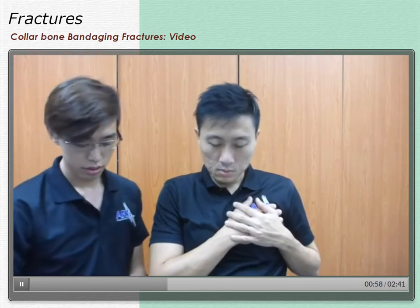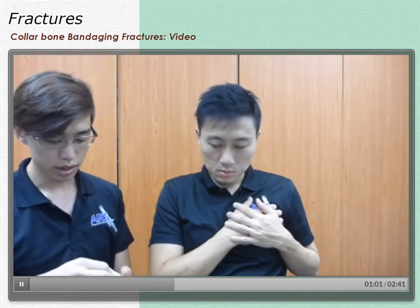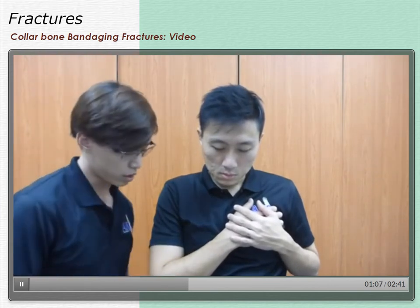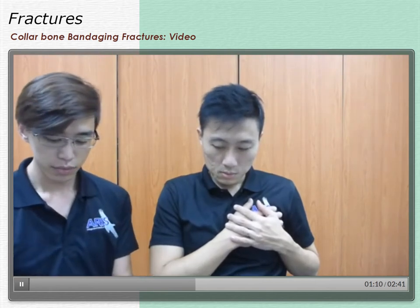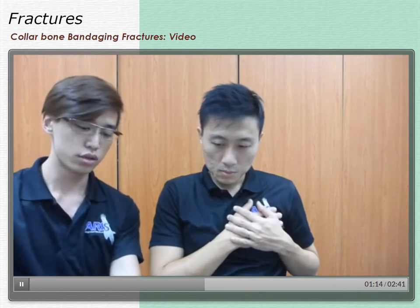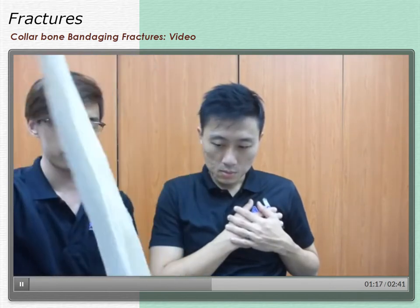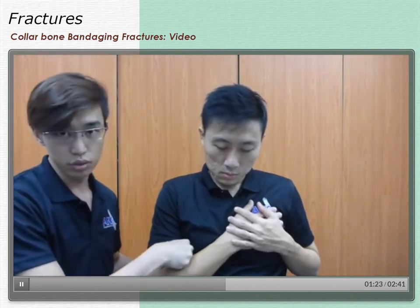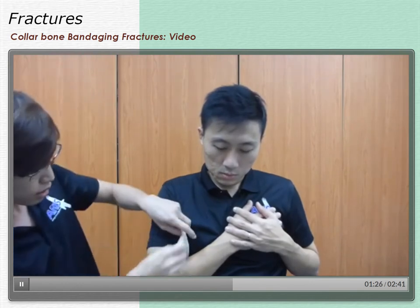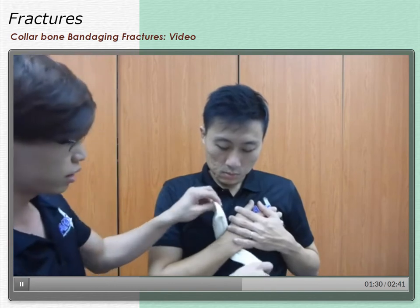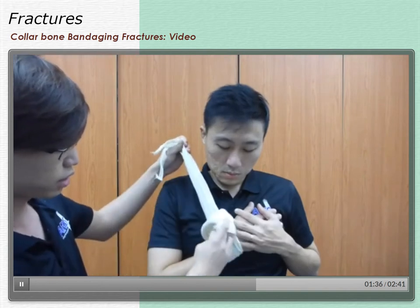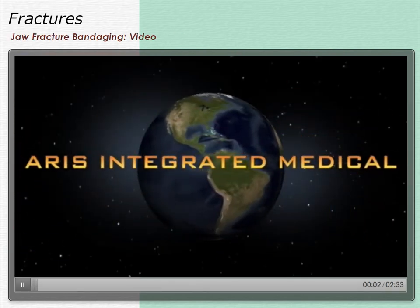Take out the triangle bandage and open it up. It is quite wide, so connect the two ends together to form a loop and put it through the elbow area. Do not raise the casualty's arms as this can cause pain. Slide the bandage to the wrist area, put the two ends through the wrist, and tighten.